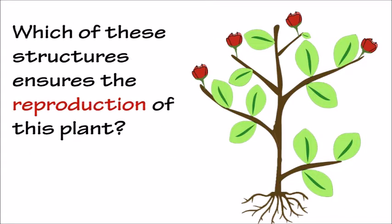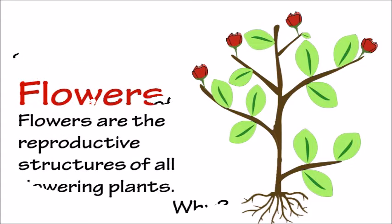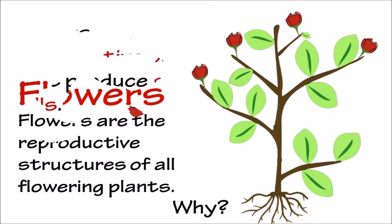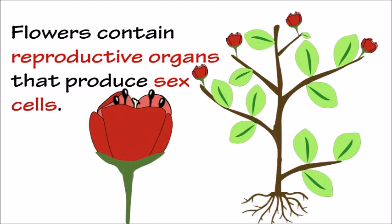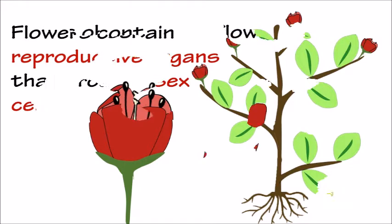Which of these structures ensures the reproduction of this plant? Flowers. Flowers are the reproductive structures of all flowering plants. Why? Because flowers contain reproductive organs that produce sex cells.